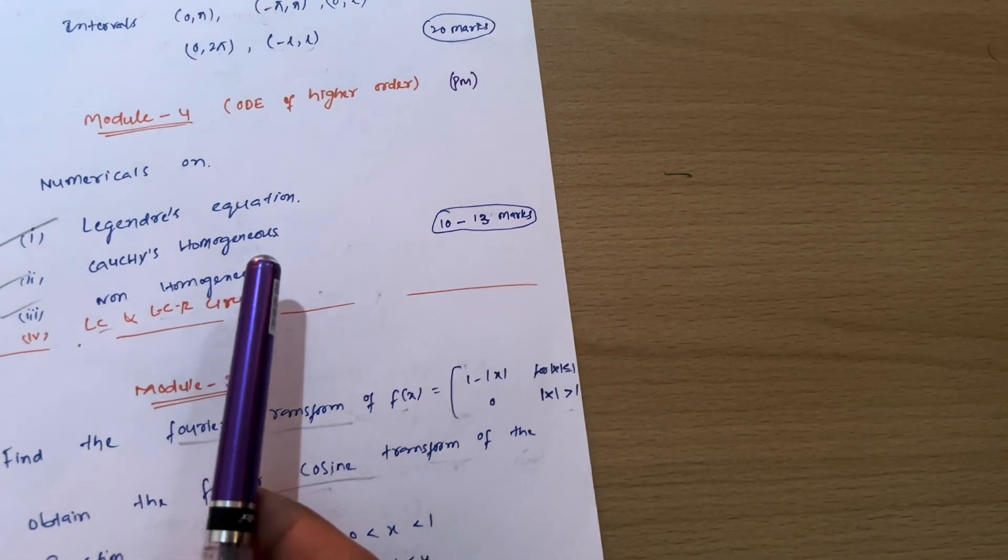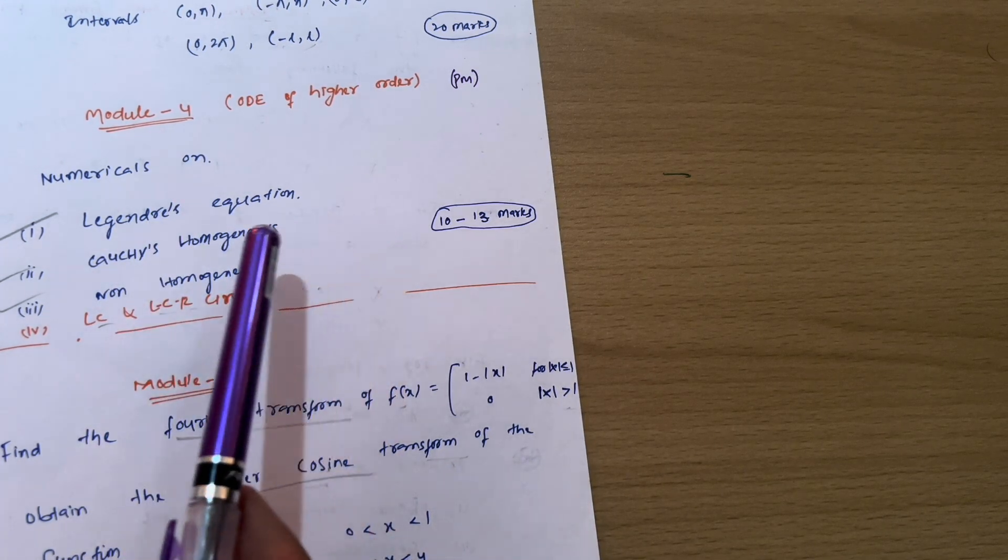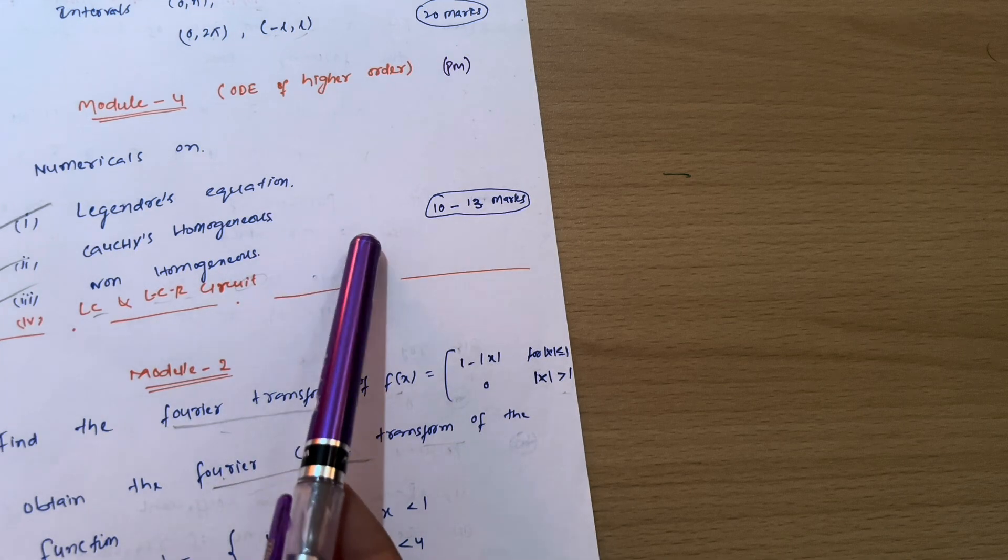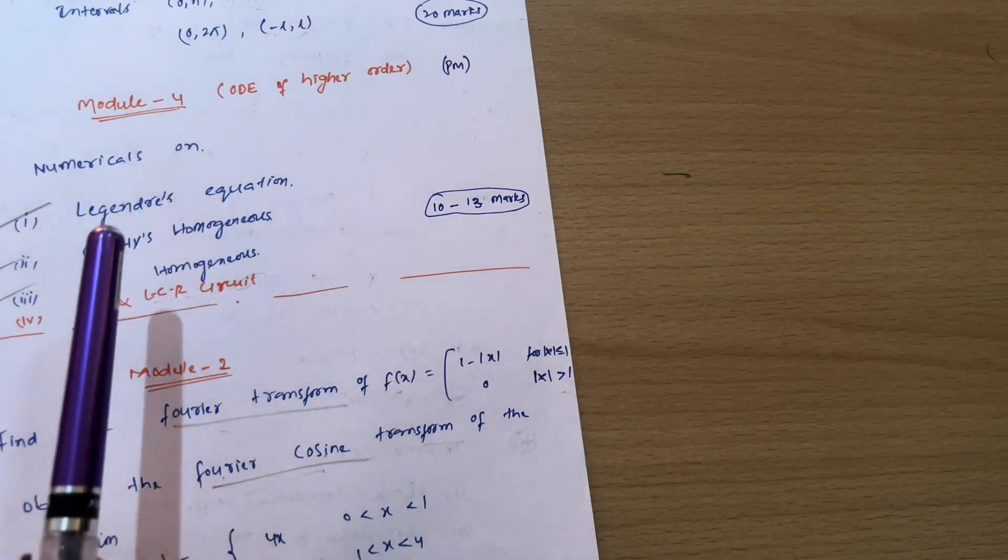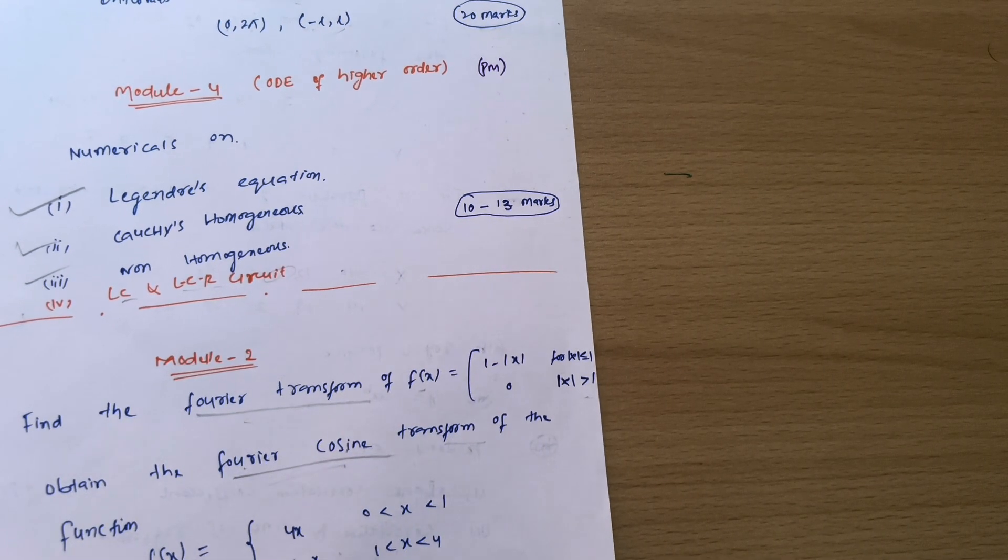So for these four topics, refer three previous year question papers that are enough to tackle your module 4. So if you are unable to get 20 marks from the module 4, at least I am expecting from you students, at least you should get 10 to 13 marks from the fourth module. I am just taking here the least case, that is 10 to 13 marks you should at least get.